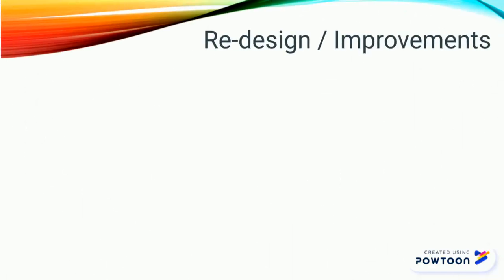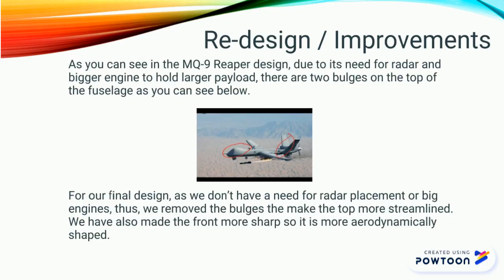For the MQ-9 Reaper design, as it requires a radar and a bigger engine, there will be two bulges at the top of the fuselage. However, for our final design, we will not require a radar or an engine, thus we will remove these bulges, and the nose of the plane will be sharper so that it will be more aerodynamically shaped.